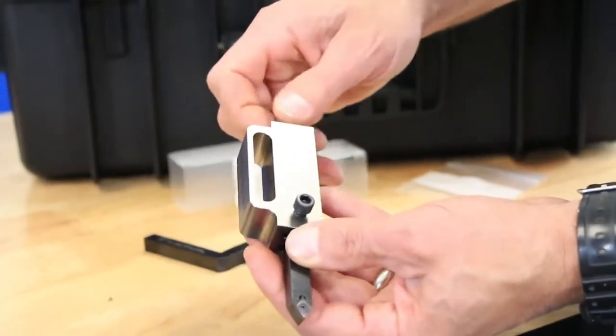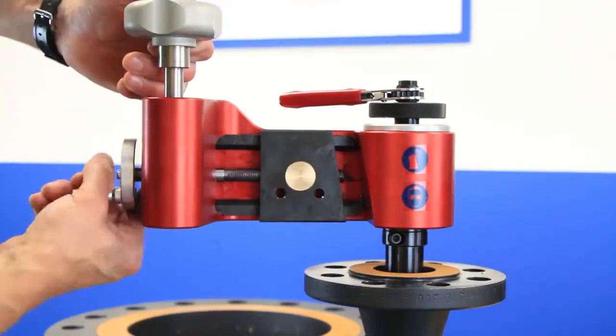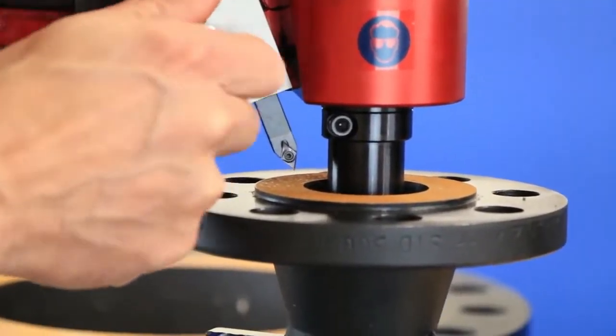Rotate the index nut clockwise pulling the insert holder up about halfway leaving clearance for final adjustments. The starting position of the carriage will vary on different sized flanges but generally it should be closer to the mandrel as the tool feeds outward.